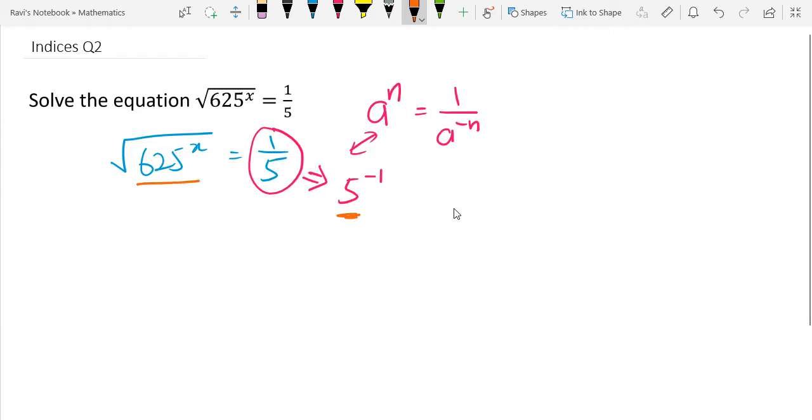And 625 is actually equals to 5 to the power of 4. Okay, so let's write that now. So 5 to the power of 4x square root equals 5 to the minus 1.